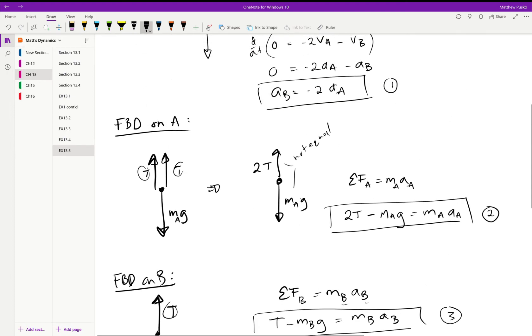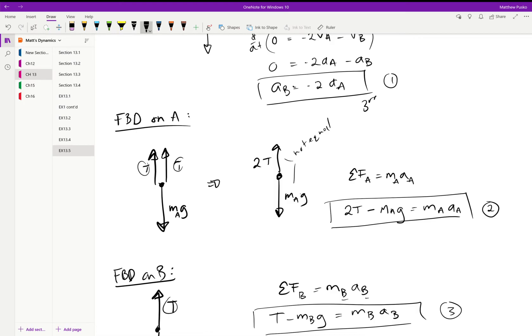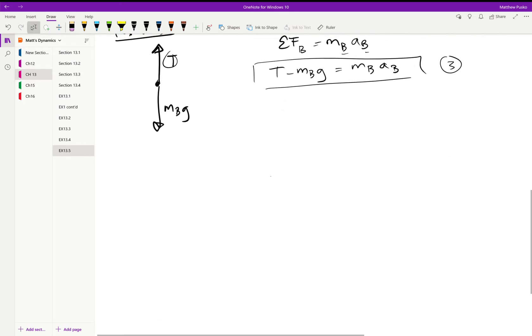We have three unknowns, we need this third equation right here to solve. When you solve it you'll get the acceleration of A equal to negative 3.27 meters per second squared, or down. The acceleration of B is equal to positive 6.54 meters per second squared going up. You can plug in if you want to get the tension, and it comes out to 327 newtons.